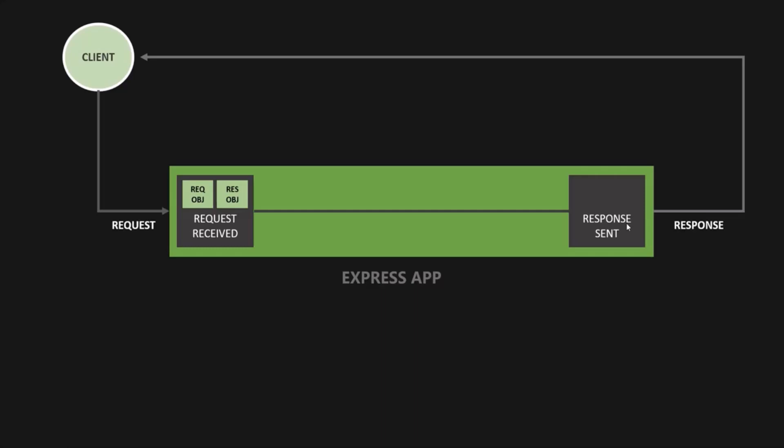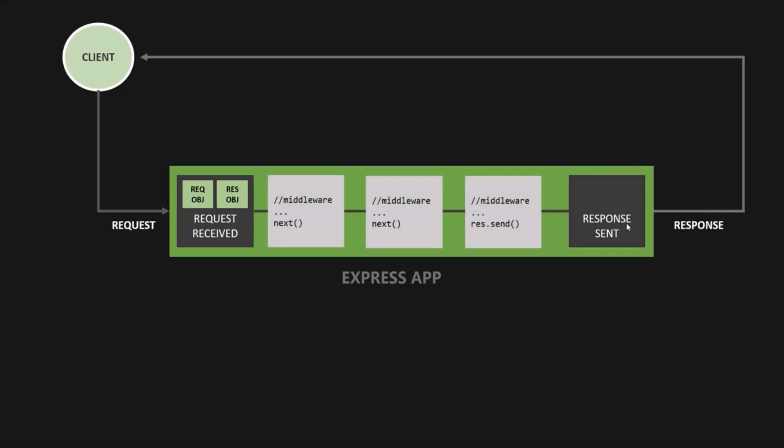This request and response object will then be used and processed in order to generate and send back a meaningful response. In order to process that data in Express, we use something called middleware. This middleware can manipulate the request or the response object. Middleware can also be used to execute any other code — it need not always be about the request and response object, but usually it is mostly used on the request object. For example, we used express.json middleware to get the request body on the request object.